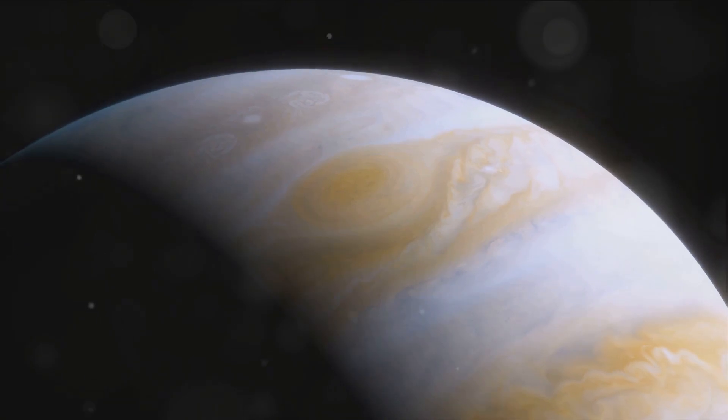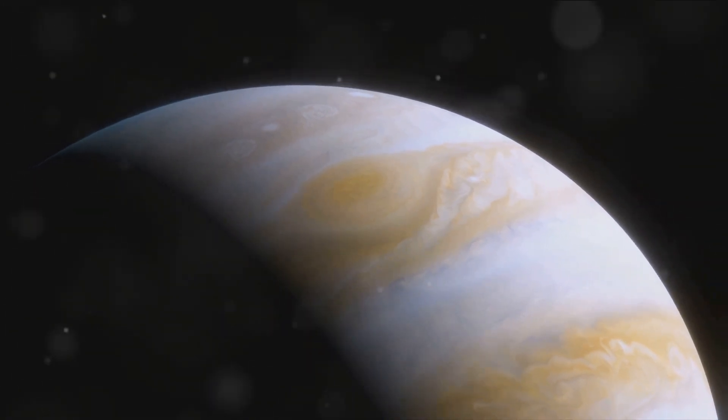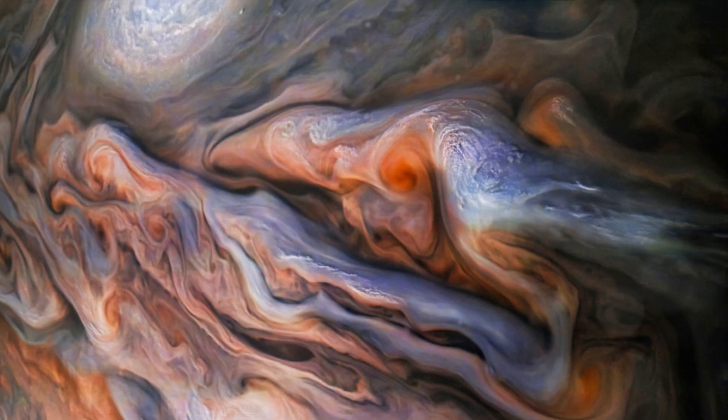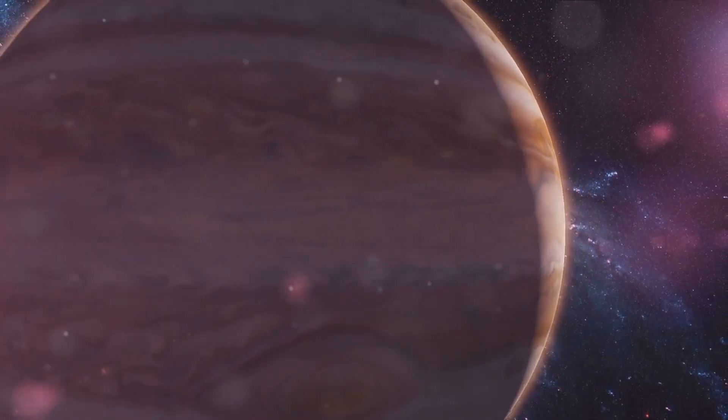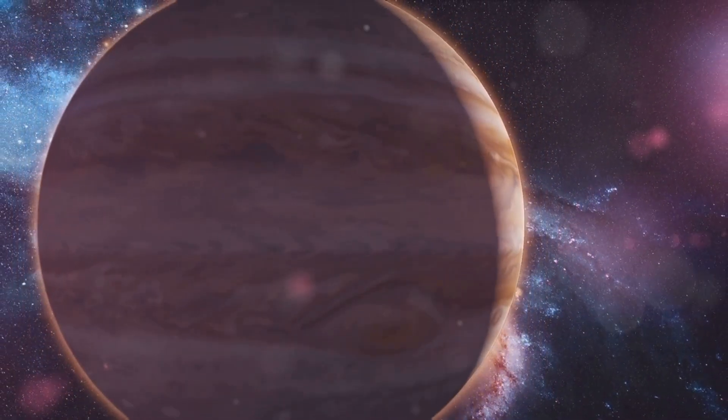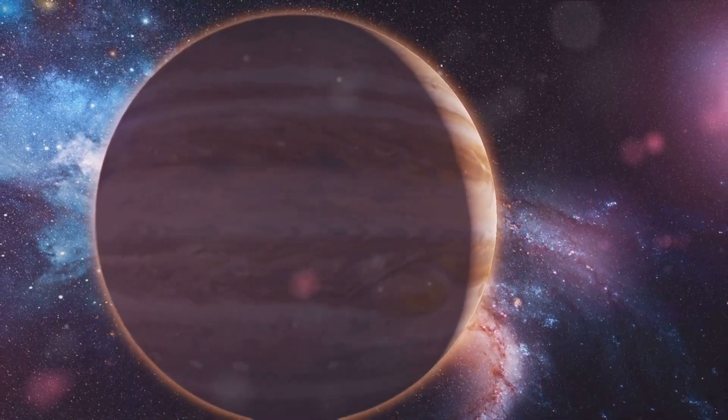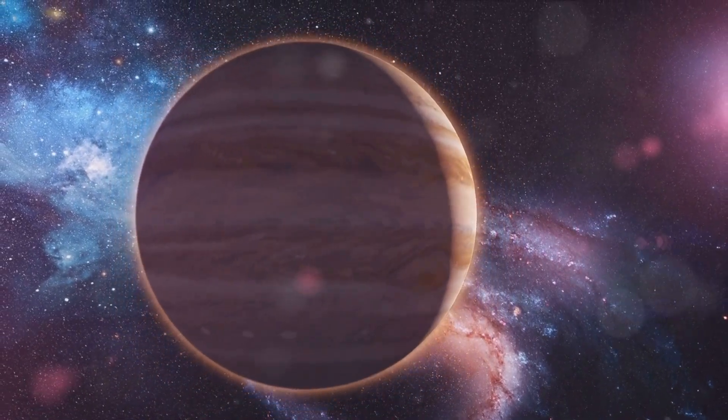To put it into perspective, this storm is so vast that it can swallow Earth two times over. Now you might be wondering why has this storm persisted for centuries when similar storms on other planets dissipate? The answer, my friends, lies in the mystery of Jupiter itself.